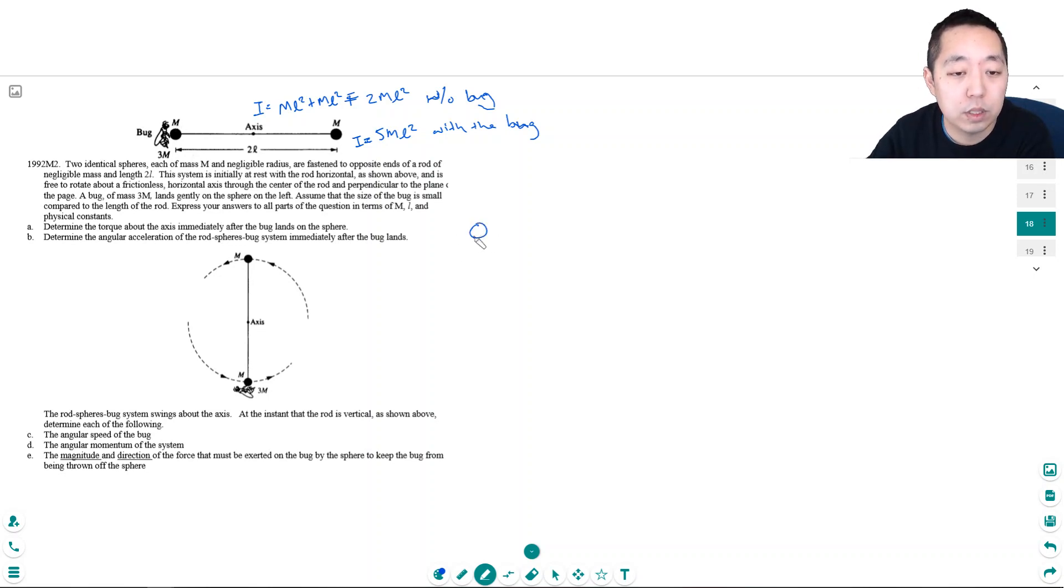Let's do my own free body diagram over here. The rod has no mass, so we're gonna do the free body diagram. I'm gonna have mg on this side, I'm gonna have mg on this side, and it's free to rotate over a frictionless horizontal axis at the center.